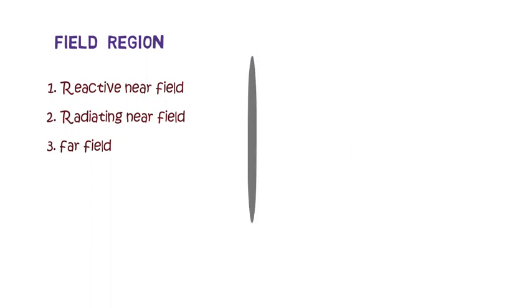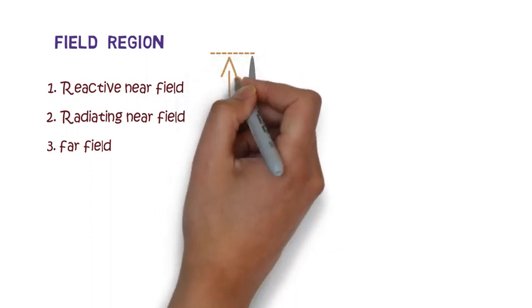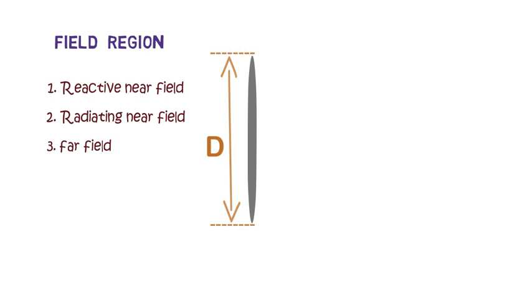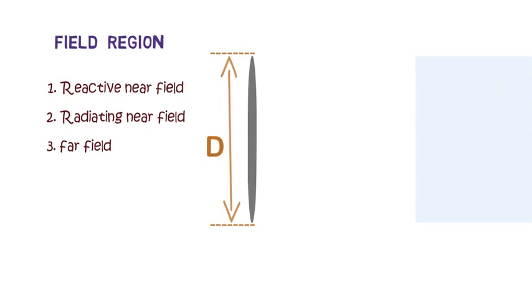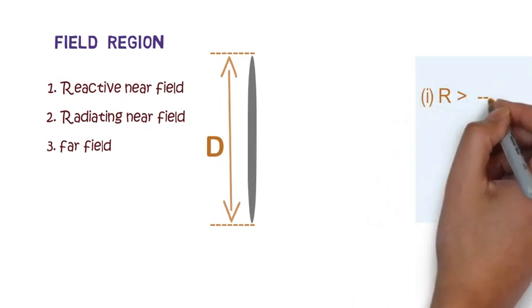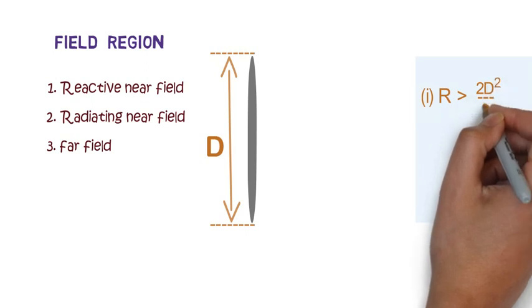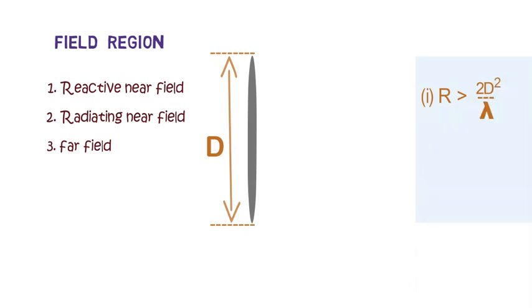Let's say we have an antenna with its maximum linear dimension as D. Then the far field region is the space which satisfies three conditions. The first condition is R must be greater than 2D² divided by λ, where λ is the wavelength of transmitting or receiving wave.